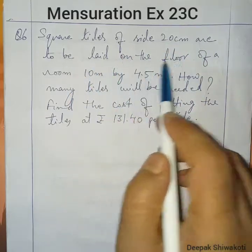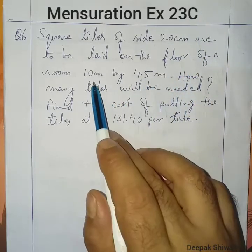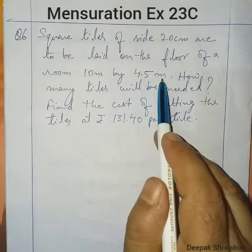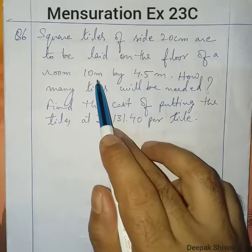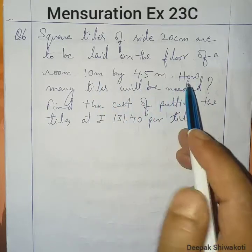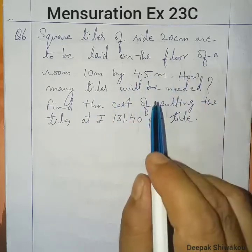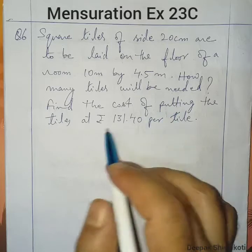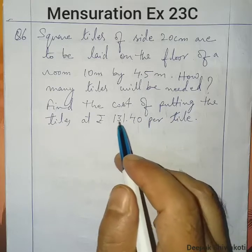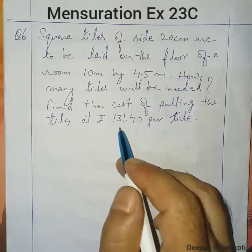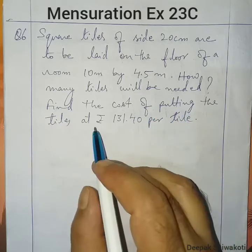These tiles are to be laid on the floor of a room. The room size is 10 meters by 4.5 meters — that is the length and breadth of the room. First, we have to find how many tiles are required to lay on the floor, and then find the cost of putting the tiles at the given rate.